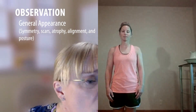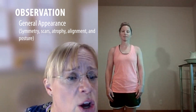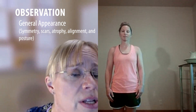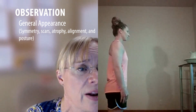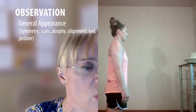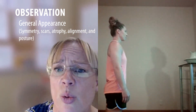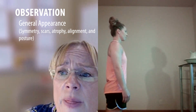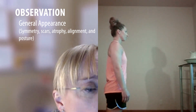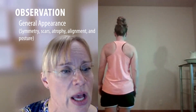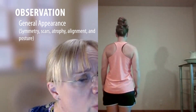Looking for scars, atrophy, symmetry, and alignment. Go ahead and turn to the side — I'm looking again at her posture. Her shoulders are rounded and her head is forward. Now I'm going to have you go ahead and turn and face the wall for me. Now I'm looking at her scapula and her shoulders again.